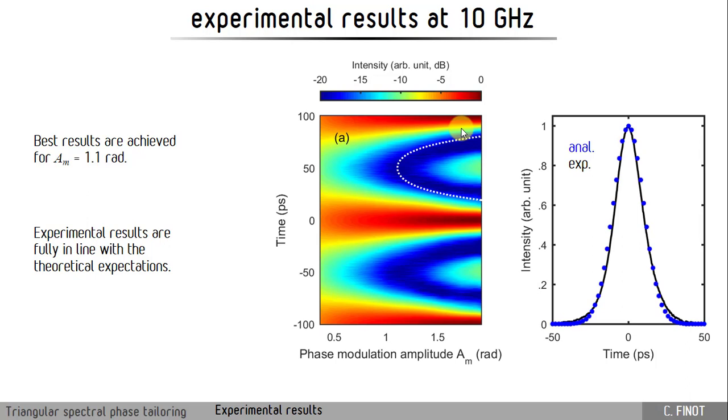What you see here is the result obtained at 10 GHz. What we can predict numerically or analytically is perfectly reproduced experimentally, and our experimental results are fully in line with the theoretical expectations. We have a very nice pulse shape for an amplitude of modulation around 1.1 radians.